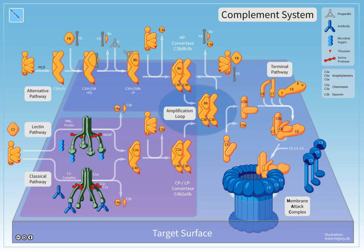Both C3A and C5A have anaphylatoxin activity, directly triggering degranulation of mast cells as well as increasing vascular permeability and smooth muscle contraction.